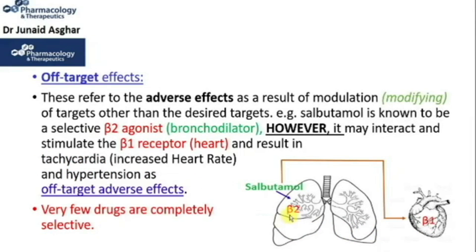Salbutamol rapidly relaxes bronchial smooth muscle and increases airflow, thus providing quick relief of acute asthma symptoms. The inhaled form of salbutamol allows more selectivity for the beta-2 receptors on the bronchial smooth muscle to achieve bronchodilation without significant tachycardia, because tachycardia is associated with activation of beta-1 receptors on the cardiac muscle — especially when the drug is taken by the oral route, which can lead to more systemic side effects.